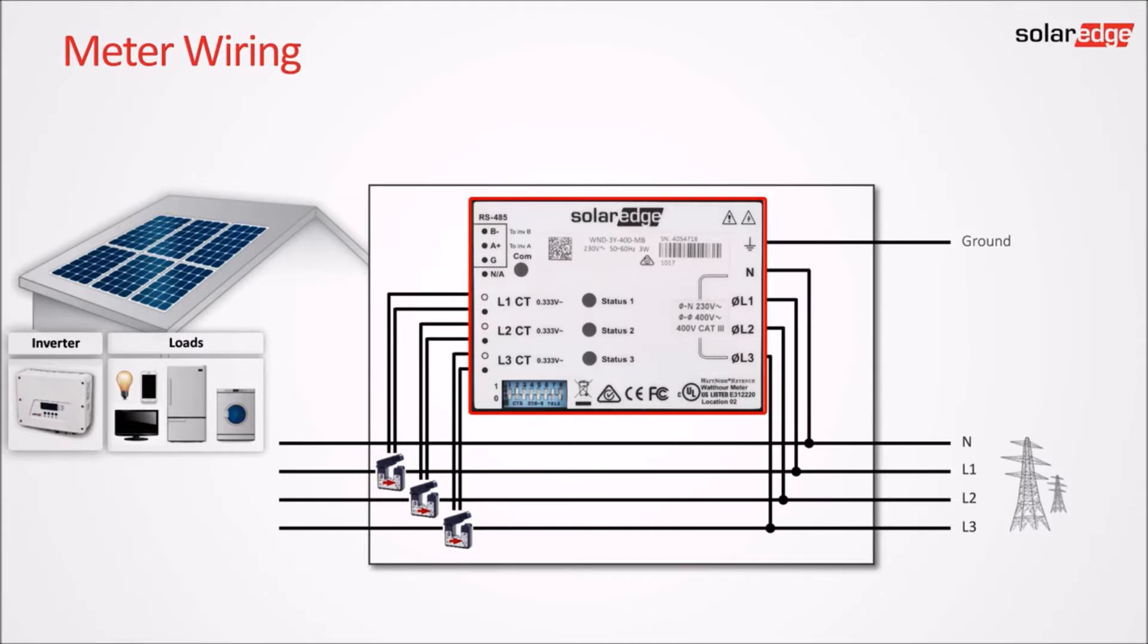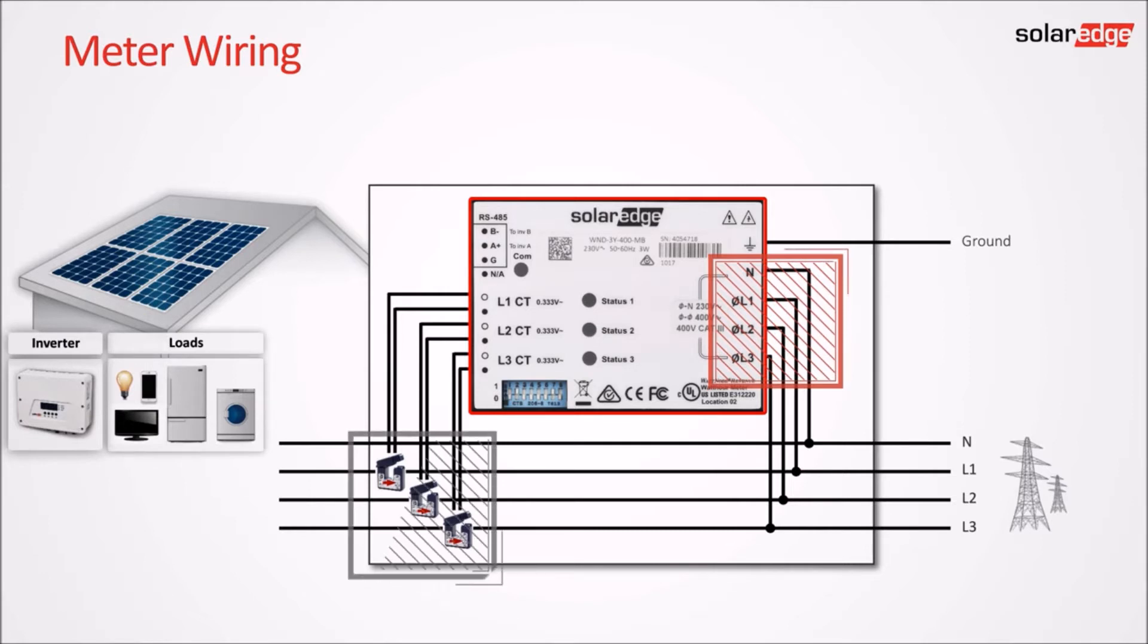When wiring the meter there are three types of connections that need to be made. Direct AC connections required to supply power to the meter. Current transformers or CTs which clamp around each phase wire and measure the current. If your utility connection is single phase only one CT is needed. RS485 for communicating the measured data to the inverter.